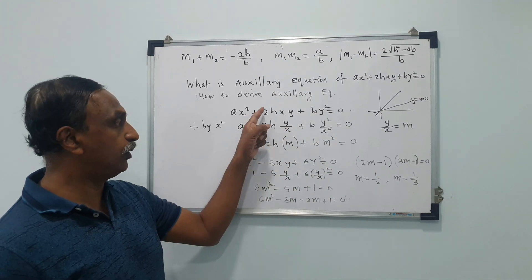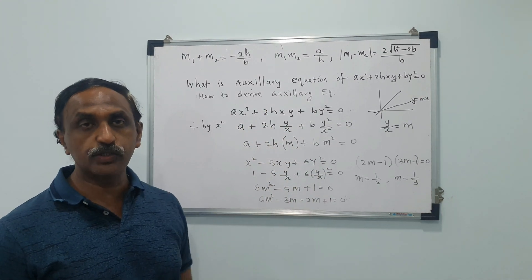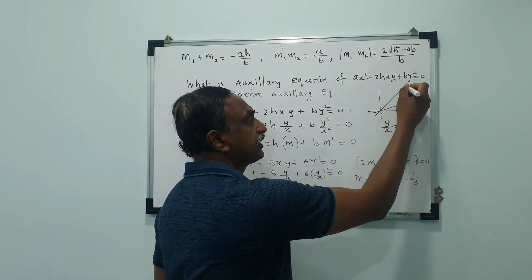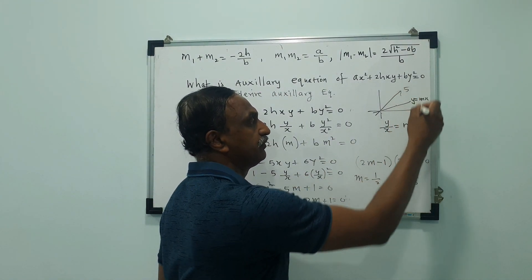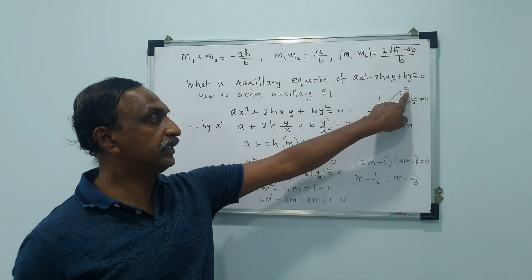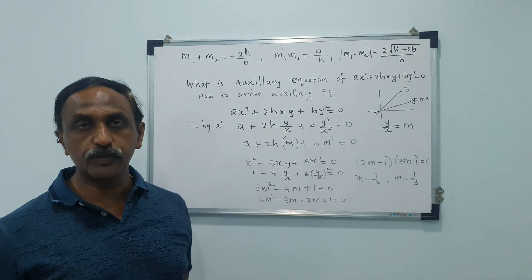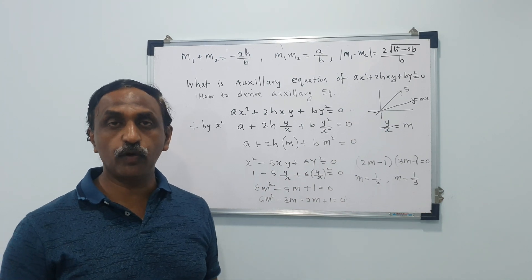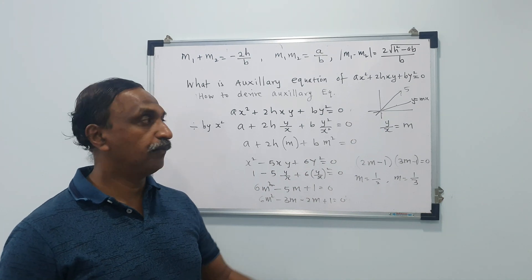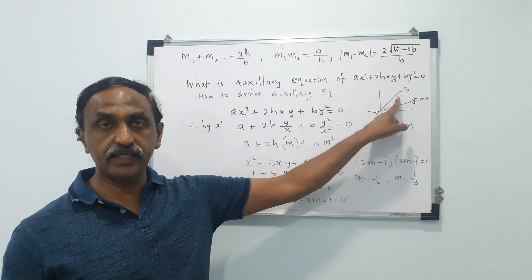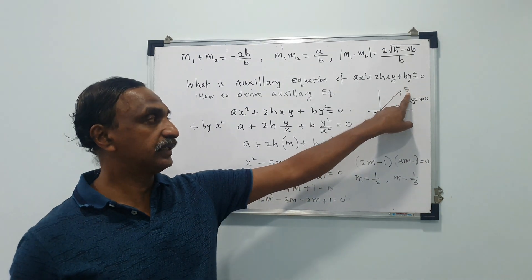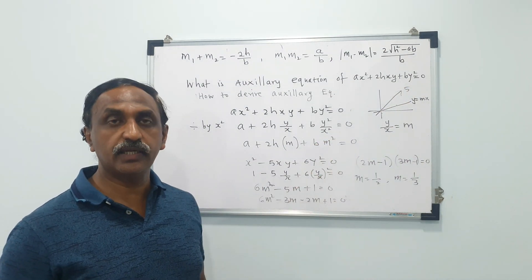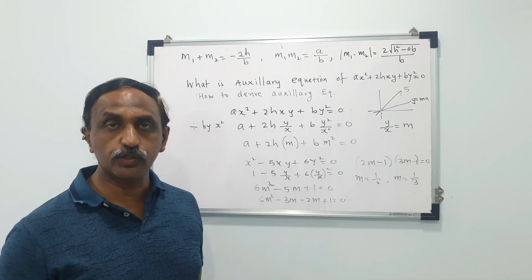Look at the homogeneous equation and derive the auxiliary equation directly. If suppose the slope of one of the lines is 5, immediately you can say that slope will satisfy the auxiliary equation because one of the values of m has to be 5. Whenever the slope of one of the lines is given to you, that slope will always satisfy the auxiliary equation. That is the application of auxiliary equation.